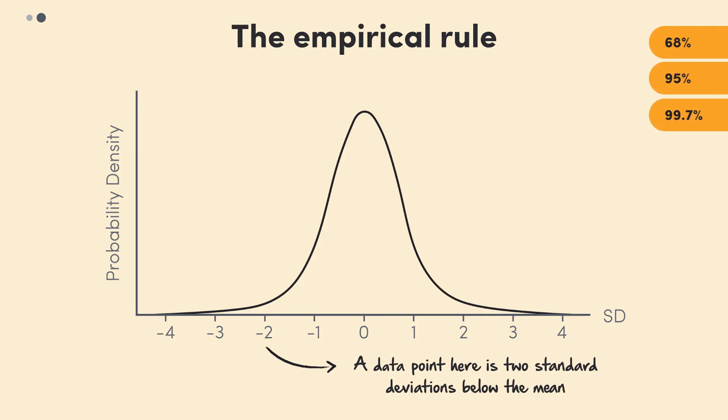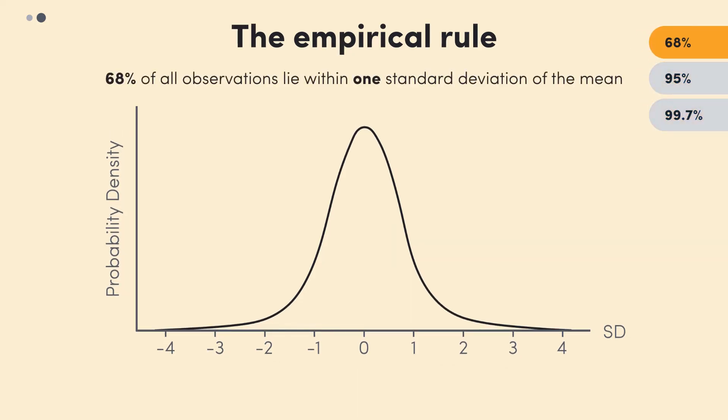Now the empirical rule has three parts. The first says that approximately 68% of all observations in a normal distribution lie within one standard deviation either side of the mean. Graphically, that means that 68% of the values lie between these boundaries. In other words, most of the values lie in this area. The remaining 32% of the values lie in the tail ends of the distribution. Because the distribution is symmetrical, 34% of the values are in each of these slices in the middle, while 16% of the values will lie here and 16% of the values will lie here.